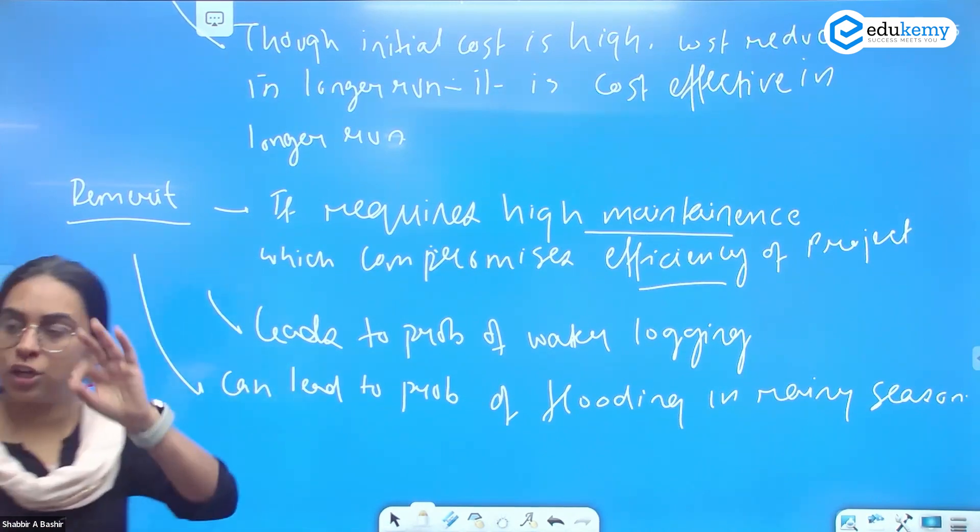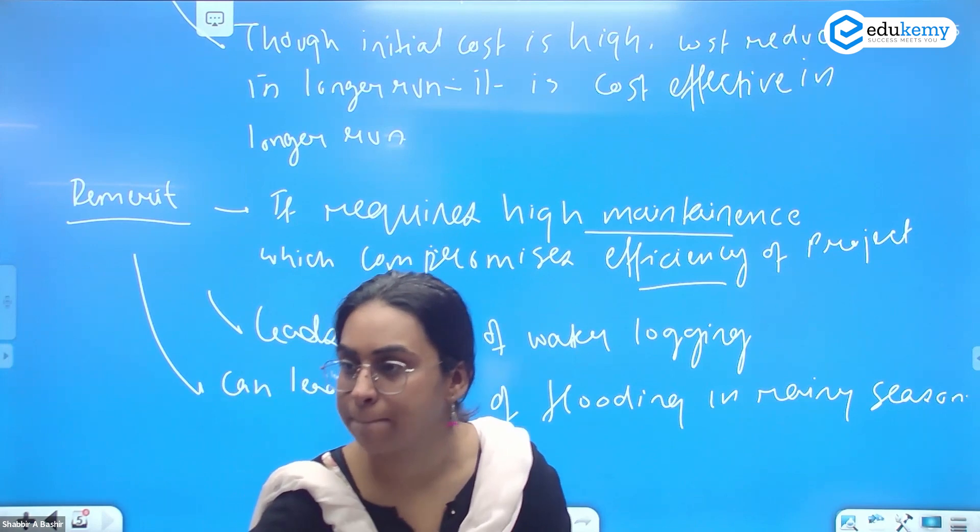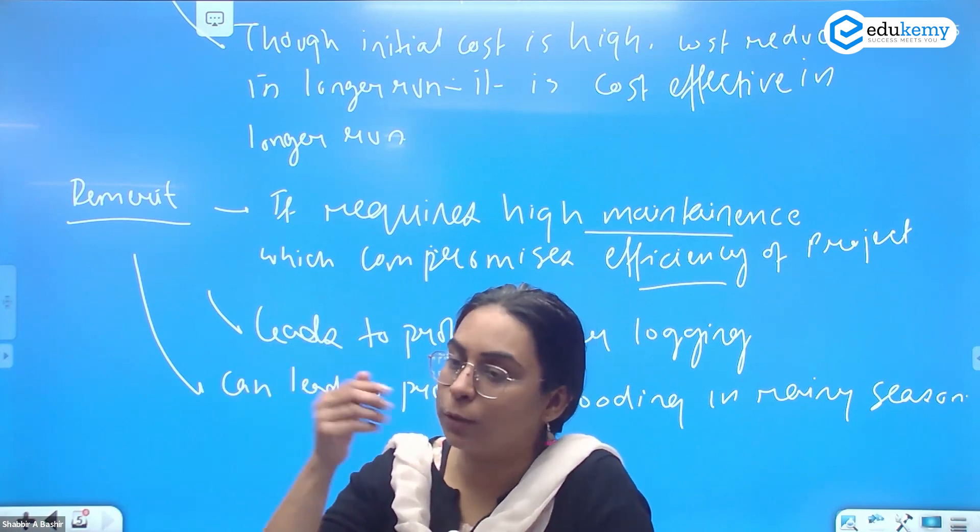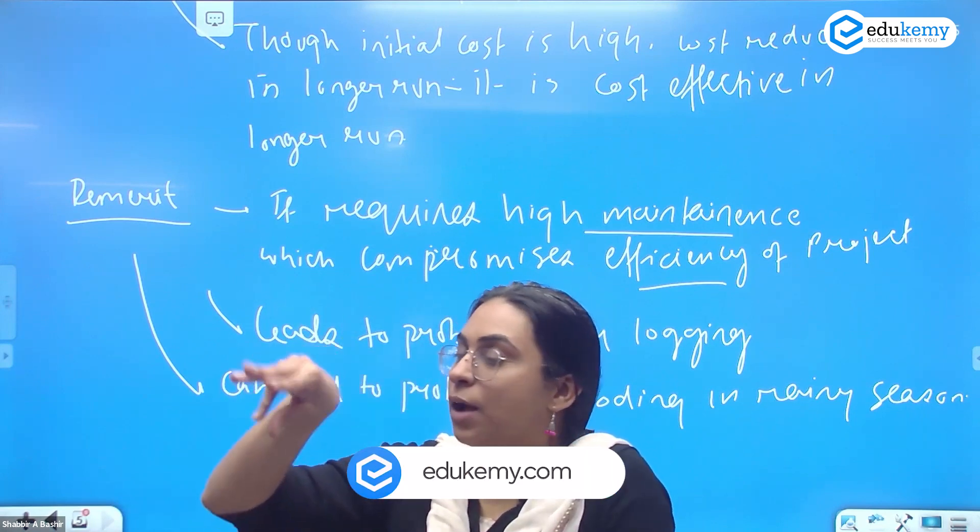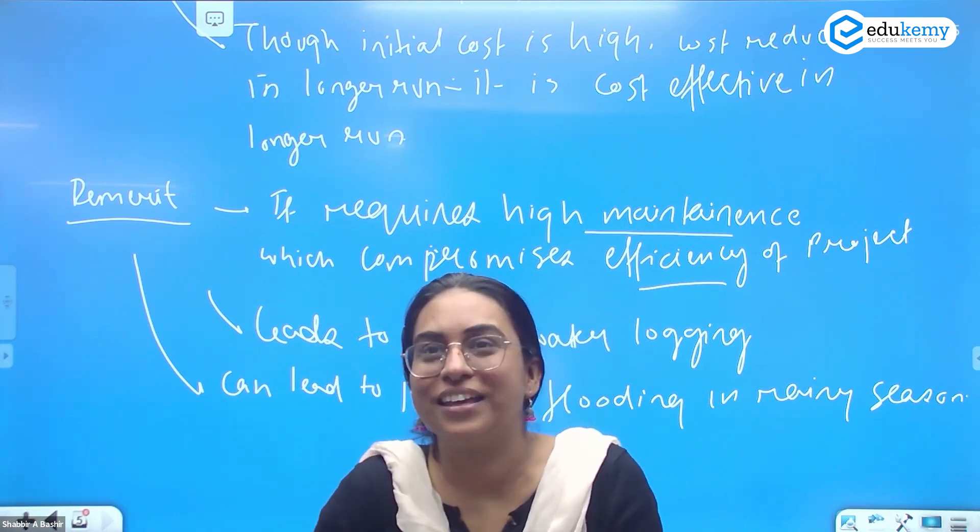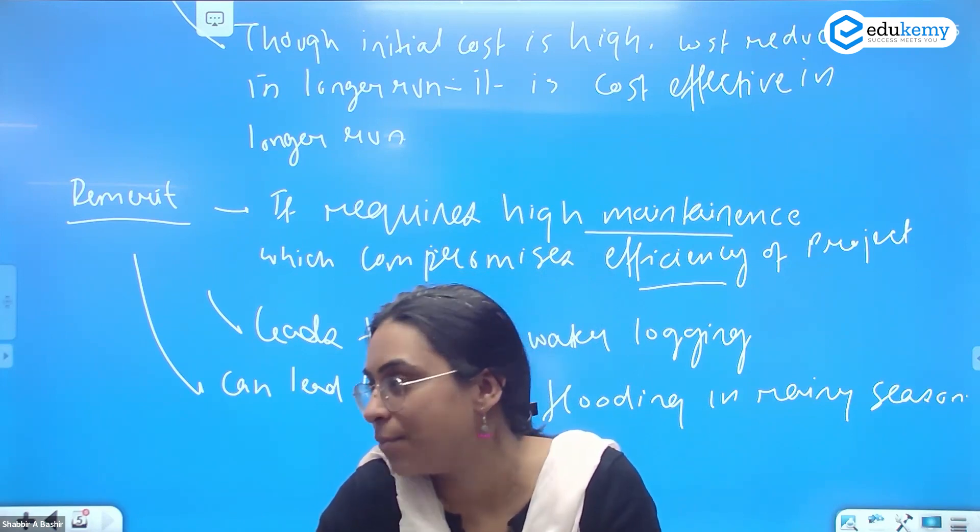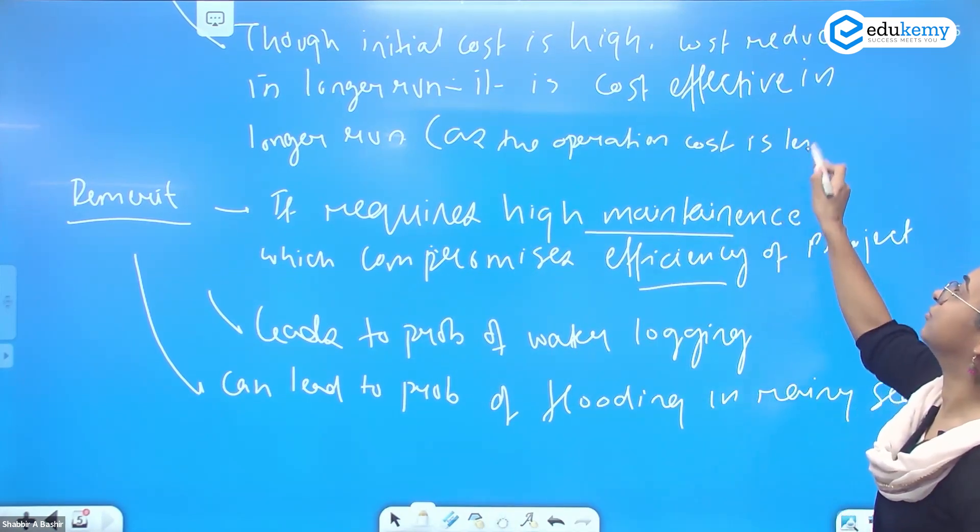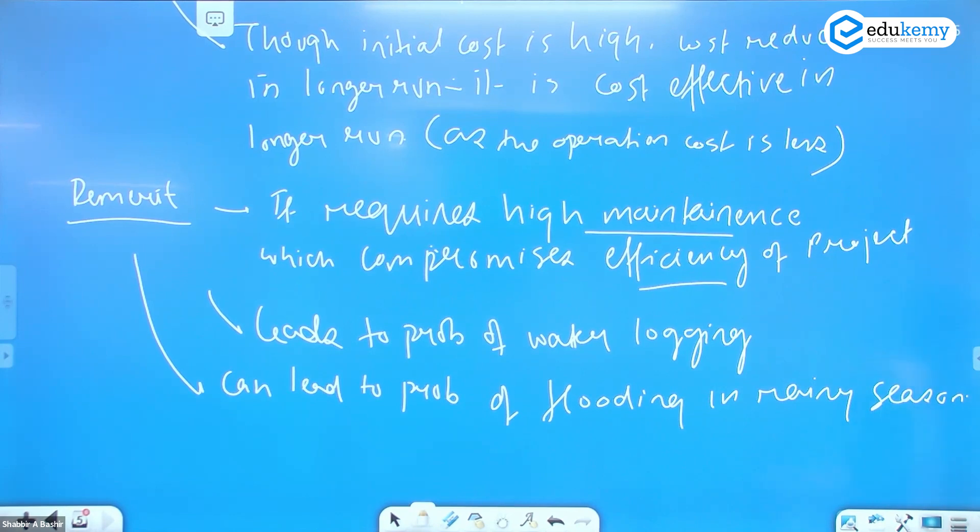The operation cost is less compared to others. Government is doing everything. But because there is lack of maintenance and lack of proactive support, there can be flooding also. From the canal, if you don't maintain, it will be silted. If we don't clean it, then flooding problems are very common.